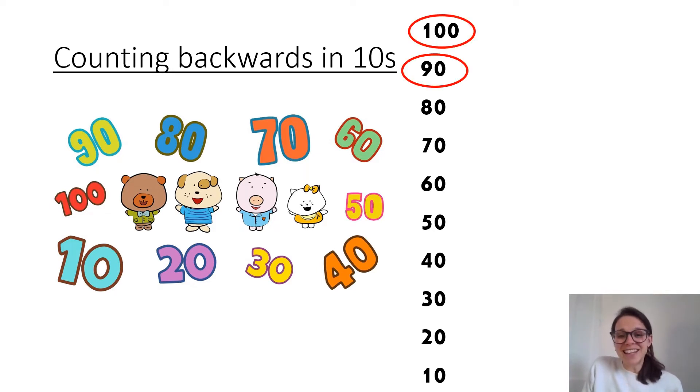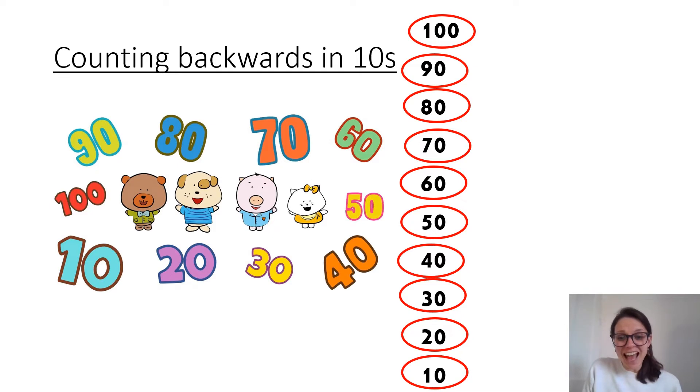One hundred, ninety, eighty, seventy, sixty, fifty, forty, thirty, twenty and ten. Well done everybody. Those are all our numbers when we're counting back in tens. From one hundred all the way to ten.